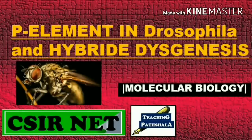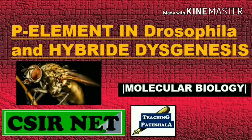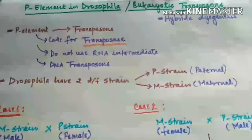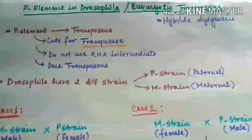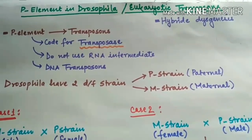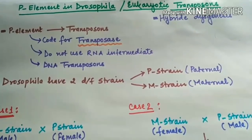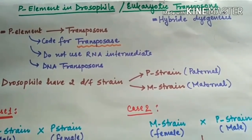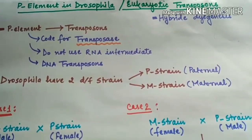Hello everyone, welcome to Teaching Paatshala. Today's topic is the P element in Drosophila and hybrid dysgenesis. This is a continuation of the previous video on transposons, where we already saw examples in bacterial and plant systems. Now we will see examples in Drosophila, where the P element is an example of a transposon in the eukaryotic system.